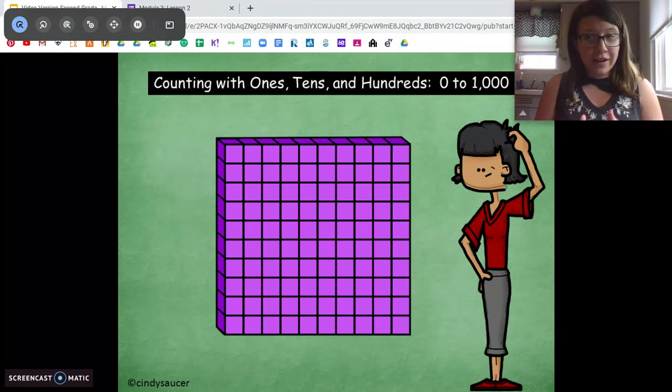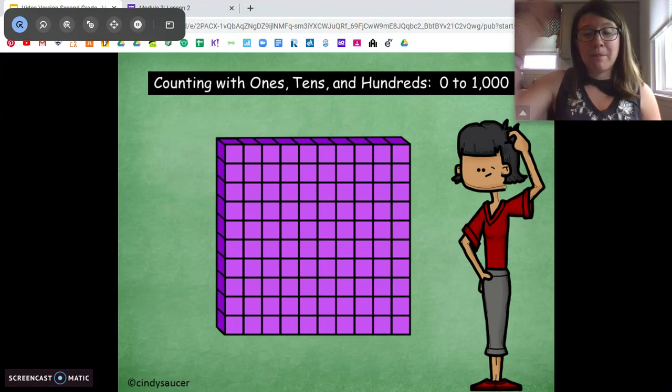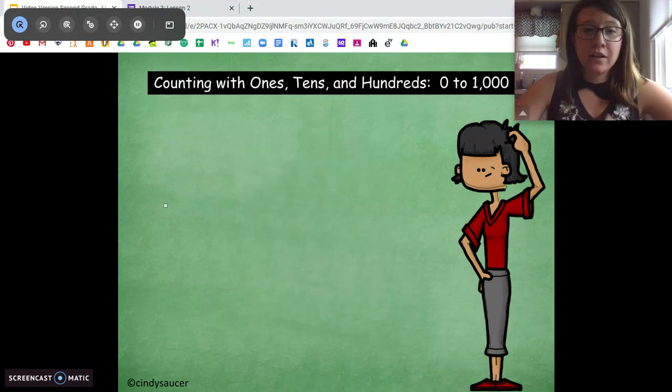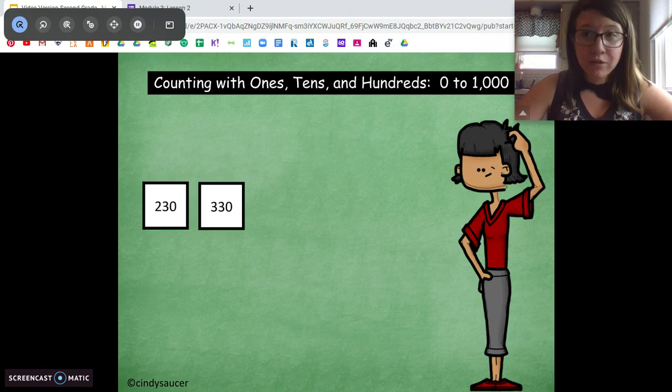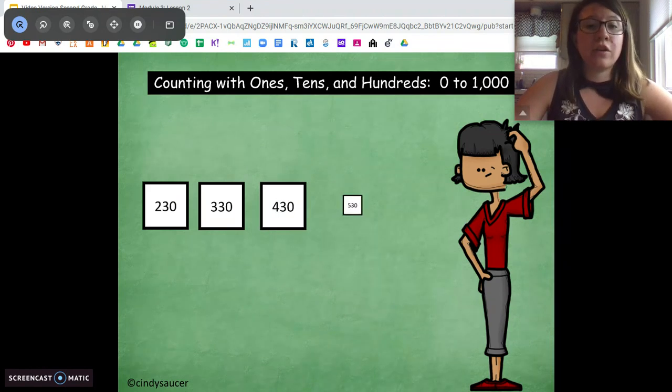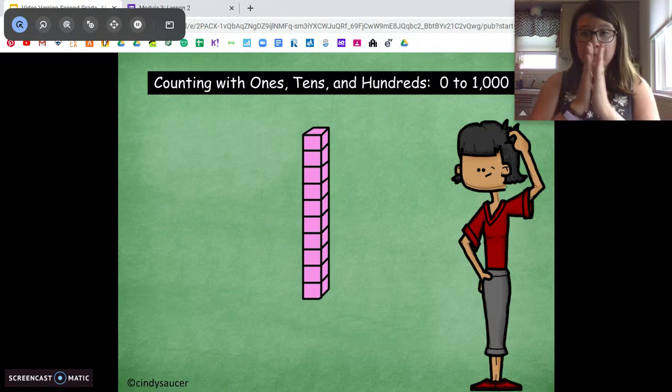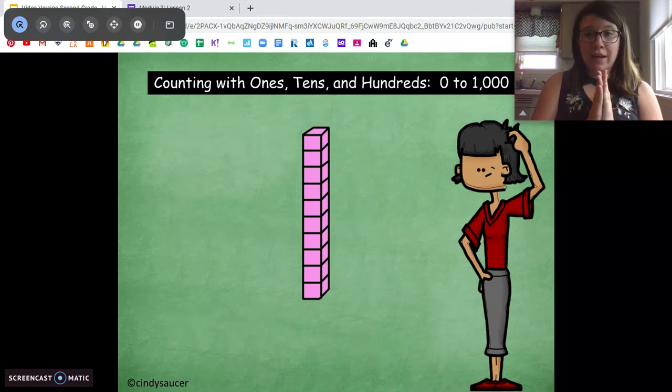100. Very good. We're starting at 130. We're going to count up by 100. So 130, 230, 330, 430, 530, 630. Oh! Pause. Now what are we going to count by?